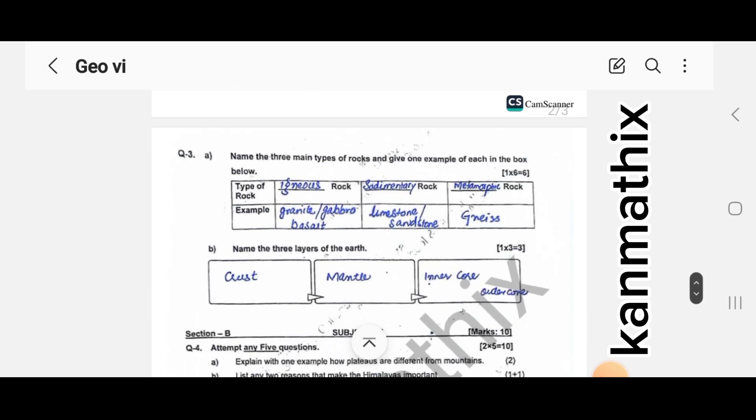Question number 3, you had to name the 3 types of rocks and give one example of each in the box below.